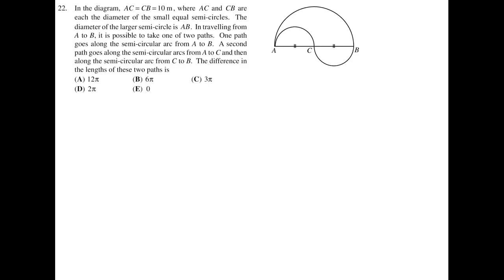In the diagram, AC is equal to CB is equal to 10, where AC and CB are each the diameter of the small equal semicircles. The diameter of the large semicircle is the full AB. In traveling from path A to B, it is possible to take one of two paths. One path goes along the semicircular arc from A to B. A second path goes along the semicircular arcs from A to C, and then along the semicircular arc from C to B.